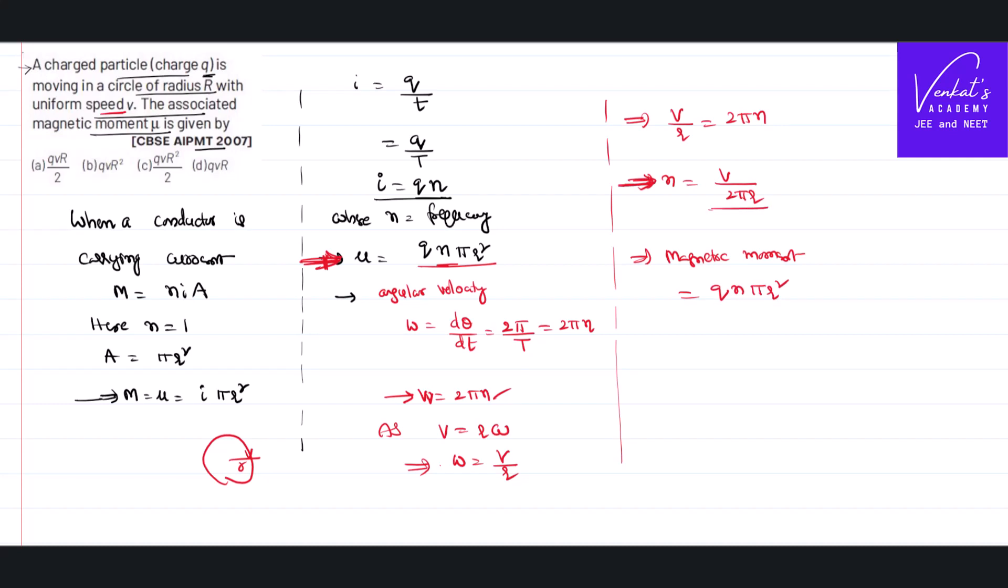but we have proved that n equal to V by 2 pi r. That is Q in the place of n substitute V by 2 pi r and pi r square. One r will cancel and pi also will cancel. So, what is remaining is Q v r by 2.